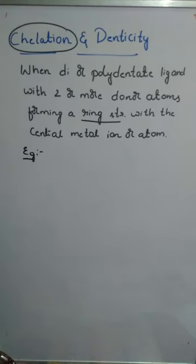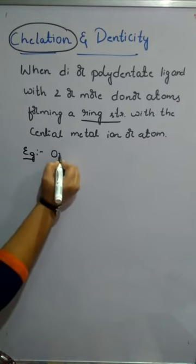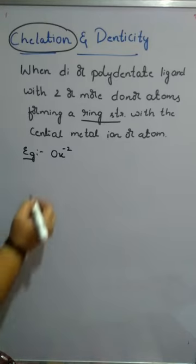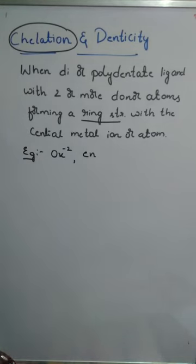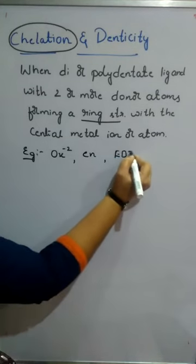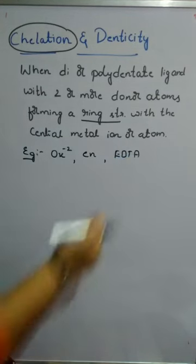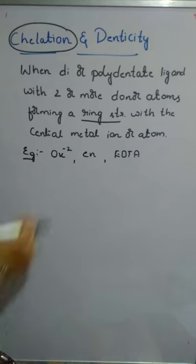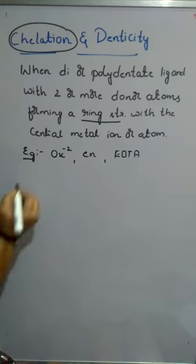For example, a bidentate ligand — oxalate ion (also called oxalato), ethylene diamine (en), and EDTA. EDTA can be either minus 3 or minus 4: minus 3 is pentadentate and minus 4 is hexadentate. Both are polydentate ligands.